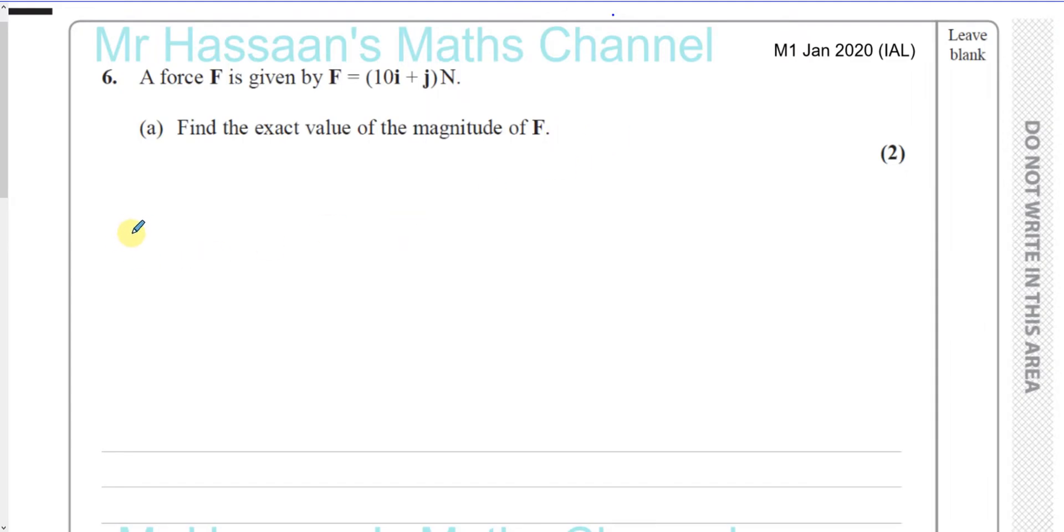Okay, so we know that the force is 10i plus j Newtons, so the magnitude of F is going to be the square root of the square of the i component plus the square of the j component, which is going to give you the square root of 101, the exact value, and there we have it.